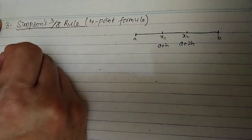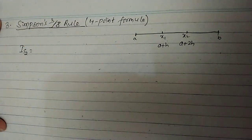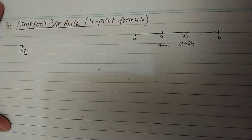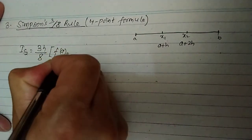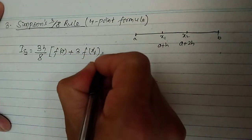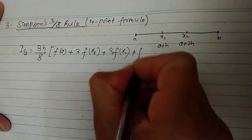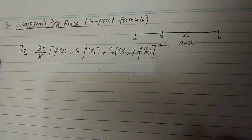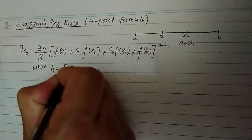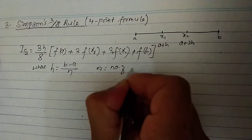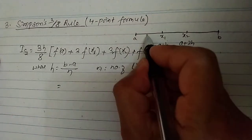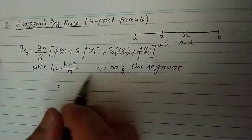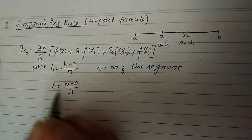The formula for Simpson's 3/8 rule is denoted as I₂, while Simpson's 1/3 rule is denoted as I₁. The formula is: (3h/8) [f(a) + 3f(x1) + 3f(x2) + f(b)], where h equals (b minus a) divided by n, and n equals the number of line segments. For Simpson's 3/8 rule, n equals 3, so h equals (b minus a) divided by 3.